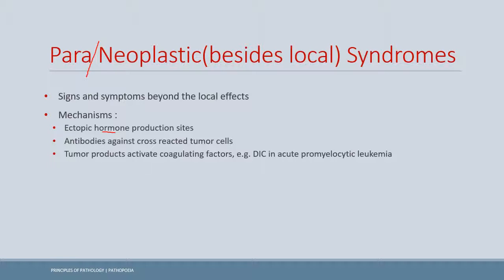A second mechanism of paraneoplastic syndrome involves cross-reacting antibodies. In bronchogenic carcinoma, the tumor cells initiate an immune response, and these immune cells cross-react with neuronal cell antigens — damaging the patient's own tissue and causing myasthenia. A third mechanism is that some tumors, such as acute promyelocytic leukemia, can cause disseminated intravascular coagulation (DIC) — this association is commonly tested and important to remember.